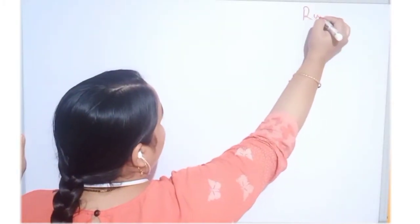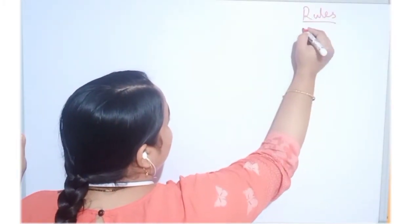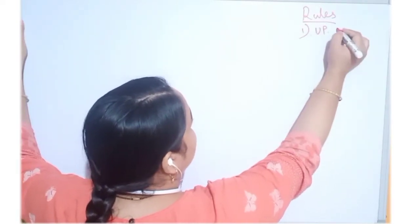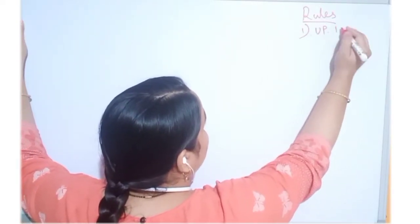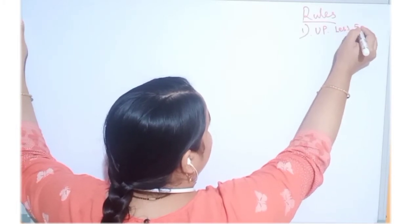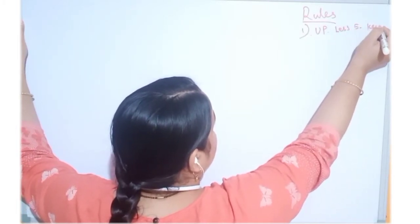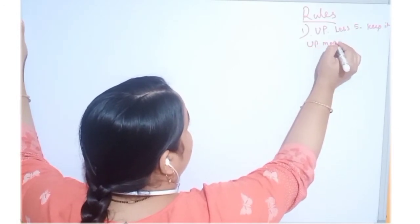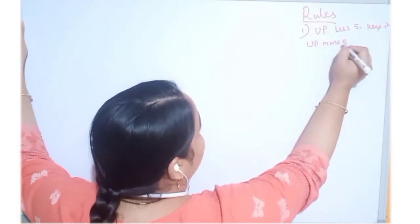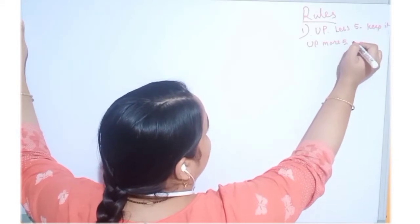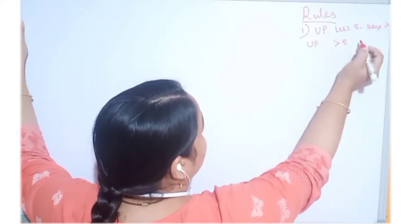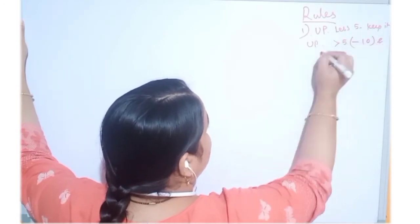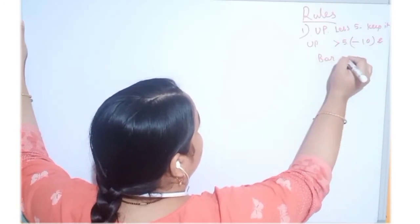First of all, let me write down the rules so that you get an idea. Rule number 1: if the unit place is less than 5, keep it as it is. If it is greater than 5, then subtract it from 10 and add a bar to it.